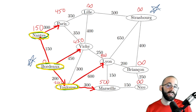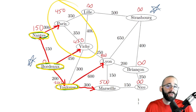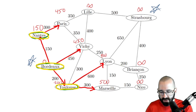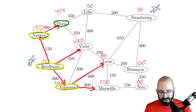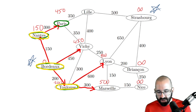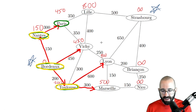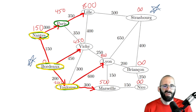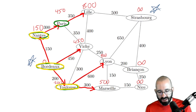Next up is Paris at 450. It has two unvisited neighboring nodes. For Lille: 450 plus 350 equals 800, less than infinity — we have a new fastest way to get to Lille. For Vichy: 450 plus 350 equals 800, but we already have 450 there — we don't update; we're not going to Vichy through Paris. We've looked at all unvisited neighbors, so Paris is now marked as visited.